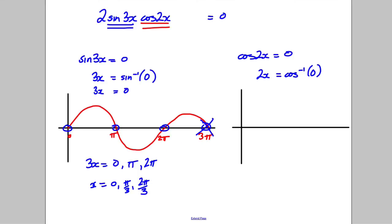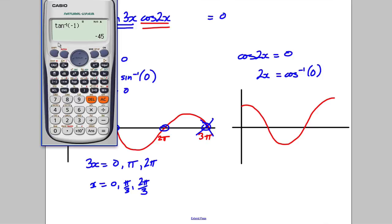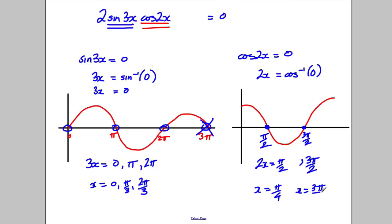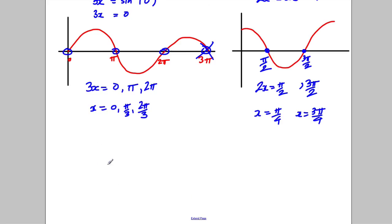For cosine(2X) equals zero, I double the range and go to 2pi. The inverse cosine of zero is 90 degrees, which is pi/2, and there's another answer at 3pi/2. So 2X equals pi/2 and 3pi/2, giving X equals pi/4 and 3pi/4. Our final answers are X equals 0, pi/4, pi/3, 2pi/3, and 3pi/4.